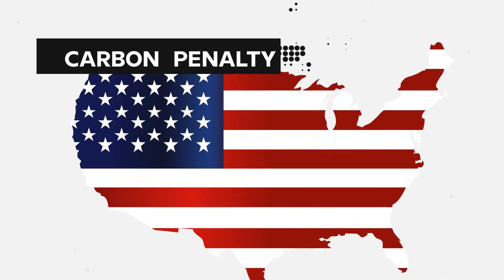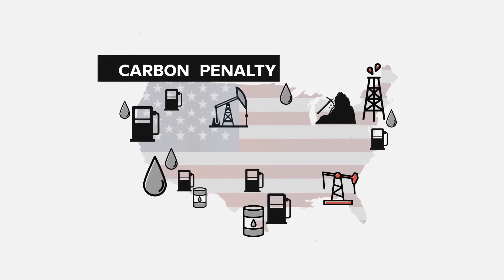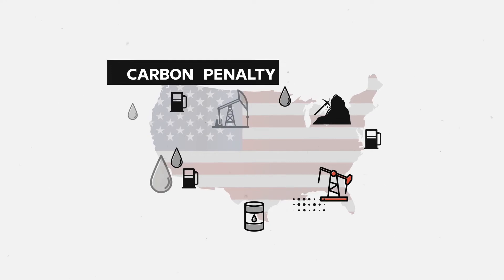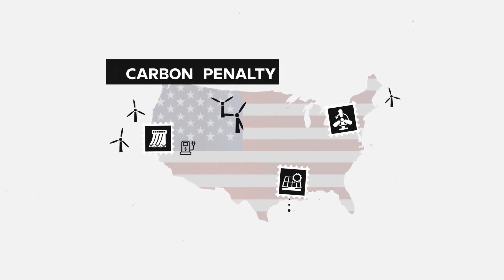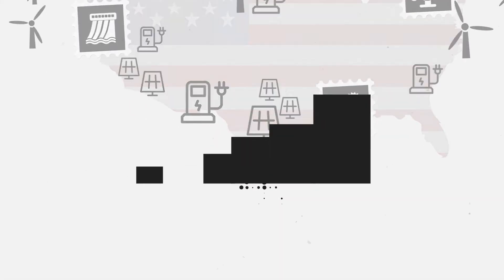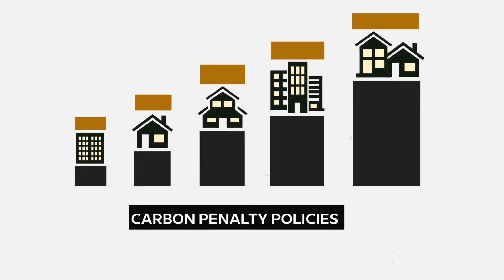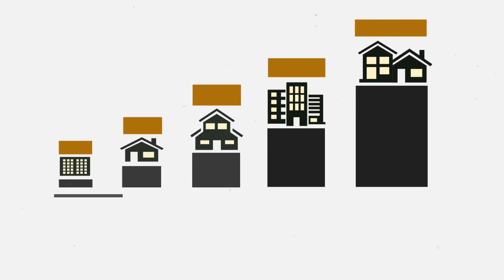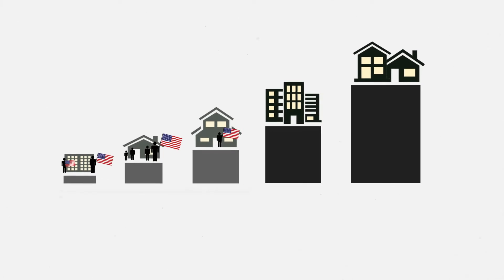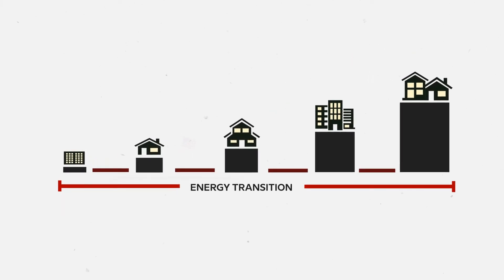A carbon penalty would incentivize producers and consumers to shift expenditures away from carbon-intensive products and services and toward low-carbon alternatives. However, if not implemented in a way that takes differences in household income into account, this policy strategy could place an unequal burden on low- and middle-income Americans. So, what's the best way to ensure an energy transition that does not widen the gap between rich and poor households?